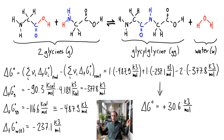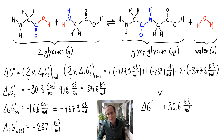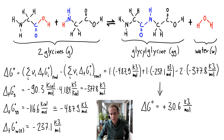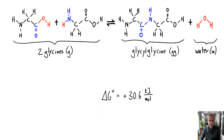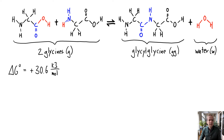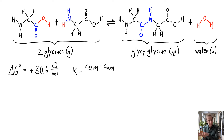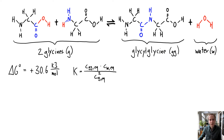This positive number shows that the reaction is not spontaneous. Remember, the free energy of reaction must be negative for a reaction to be spontaneous. Now, what does that free energy of reaction mean for the equilibrium? We calculate the equilibrium constant using the concentrations of products multiplied together, divided by concentrations of reactants raised to their stoichiometric coefficients — here, 2 in the exponent.